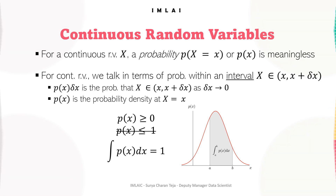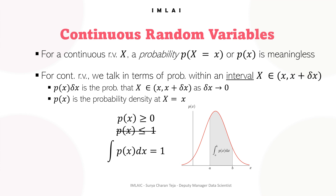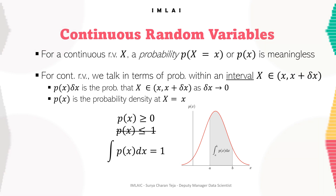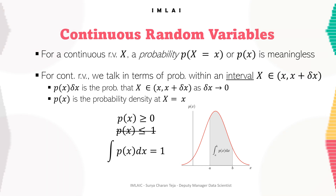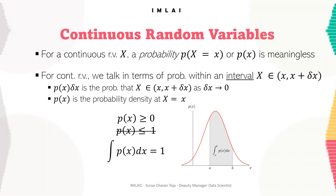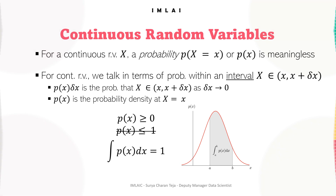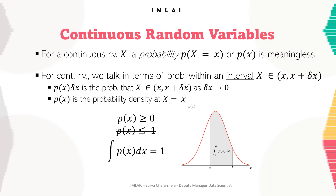Some examples of continuous random variables include: first, the height of individuals in a population — this variable can take on any value between the minimum and maximum heights observed in the population. The probability of any particular value is zero, and the probability of a range of values is determined by the PDF of the variable. Second, the temperature of a room — this variable can take on any value between the minimum and maximum temperatures measurable in the room, and again the probability of any particular value is zero.